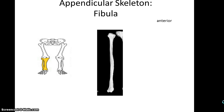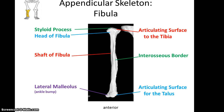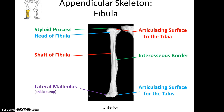The fibula is the skinny little bone on the lateral side of the lower leg. Its most proximal end is the head of the fibula, with a small styloid process sticking up and a smooth articulating surface that articulates with the tibia. Along the shaft of the fibula is an interosseous border, where the interosseous membrane connects to it. At the distal end is the lateral malleolus — the lateral bump above the ankle — and an articulating surface for the talus.